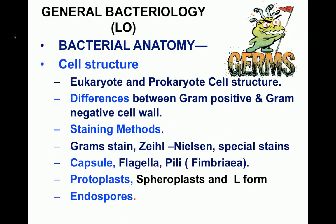At the end of this topic on general bacteriology, you should be familiar with bacterial anatomy, the cell structure of both eukaryotic and prokaryotic cells, differences between gram-positive and gram-negative cell walls, all staining methods, the function of capsule, flagella, pili or fimbria, and defective cell walls: protoplast, spheroplast, and L-forms.